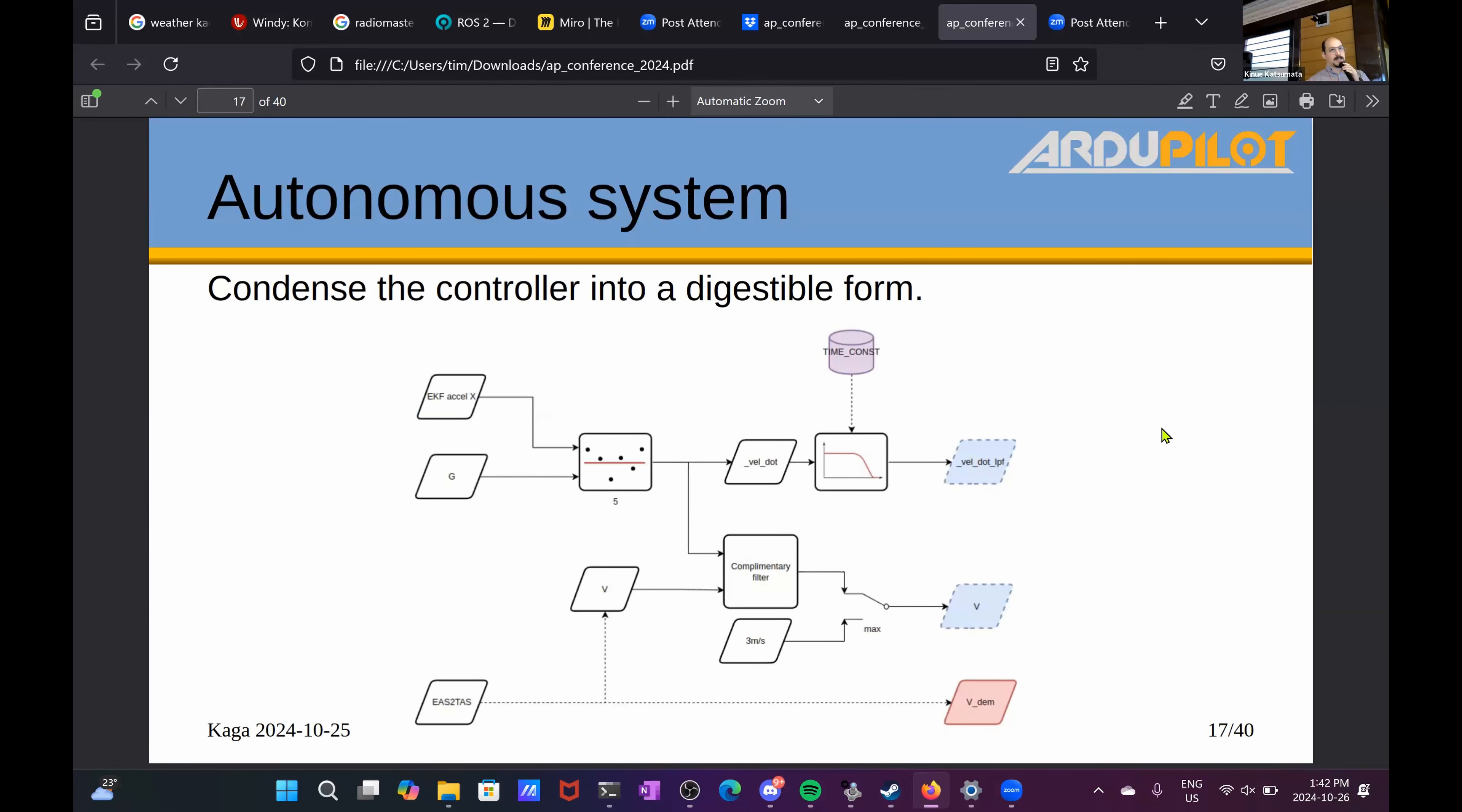On the controller side, the TECS.cpp file is around 700 lines of code, maybe more. So I had to do an interpretation to distill everything into simpler equations. And this is why, Bill, I asked you, how easy was it for you for the PID counterparts?